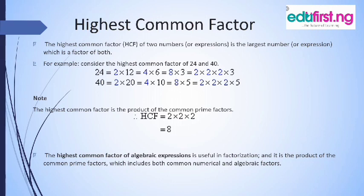The product of the common prime factors here is 2 multiplied by 2 multiplied by 2, which is 8. So the highest common factor of 24 and 40 is 8. I hope you understand. With this, I hope you can have a recap of the basic concept of HCF.